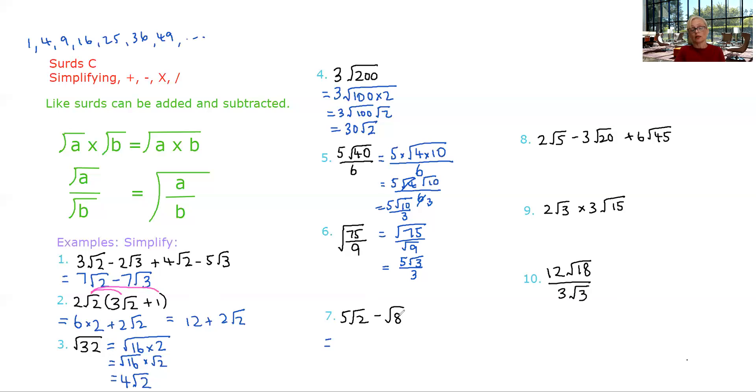Question 7. 5 root 2 minus root 8. They're not like surds, so we can't do anything as is. However, let's see if perhaps we might be able to do something to simplify this square root of 8. Well, root 2 is already in simplest form. There's nothing we can do with that. 8 is 4 times 2. So root 8 is 2 root 2. Because I said it was square root 4 by 2, which is square root 4 by square root 2, which is 2 root 2. And then we have like surds. We've got 5 root 2 minus 2 root 2 is 3 root 2.